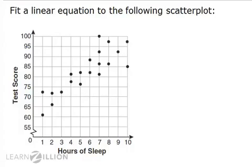If you see how the data trend, it looks like the more sleep students got, the higher their test scores were, which sort of makes sense. Though these scatterplots don't form an exact line, the trend is still linear. So we're going to model it with a linear equation in y equals mx plus b.